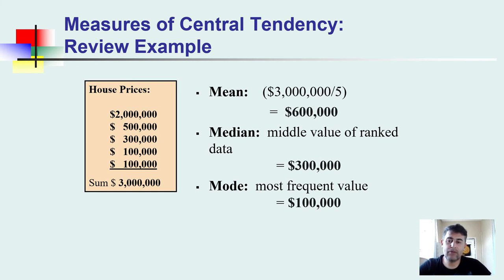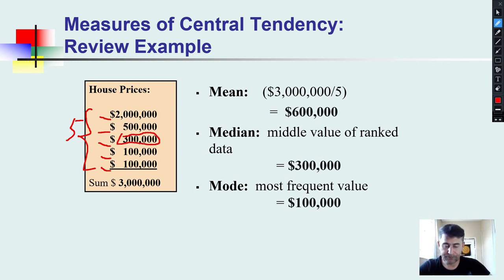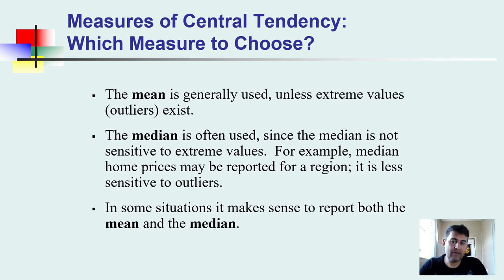Let's wrap up with a review example using five house prices. The first house is $2,000,000; the second is $500,000; the third is $300,000; and the fourth and fifth are each $100,000. To find the mean, we sum all of them: $3,000,000 divided by 5 gives a mean of $600,000. The median — the central value — is $300,000. The most frequent price is $100,000, occurring twice, so the mode is $100,000.